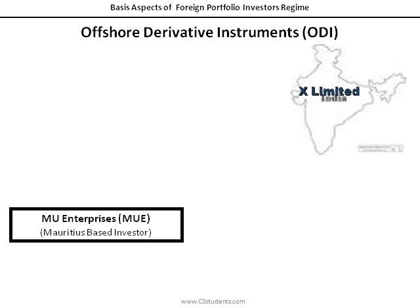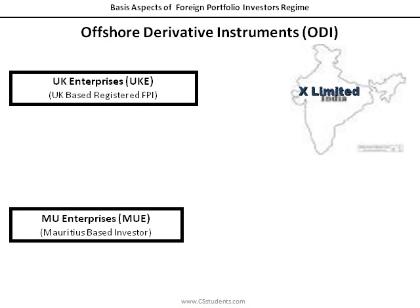MU Enterprises is a financial investor. It intends to earn profits by making investment and may not be interested in actually holding the security. There is another entity, UK Enterprises based at UK, which is a registered FPI. UK Enterprises has a solution for MU Enterprises. As a registered FPI, UK Enterprises would purchase the same quantity of equity shares of X Limited on the Indian Stock Exchange as MU Enterprises wanted to purchase — for example, shares worth Rs. 60,000 or equal US Dollars 1,000. Then UK Enterprises will enter into a contract with MU Enterprises.